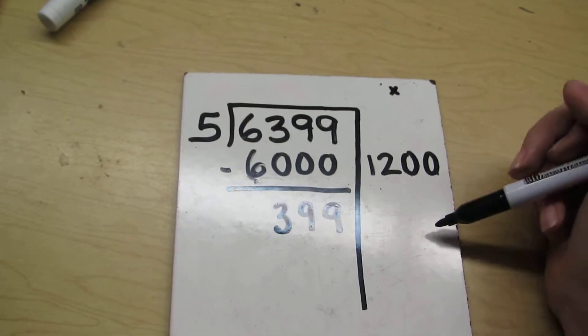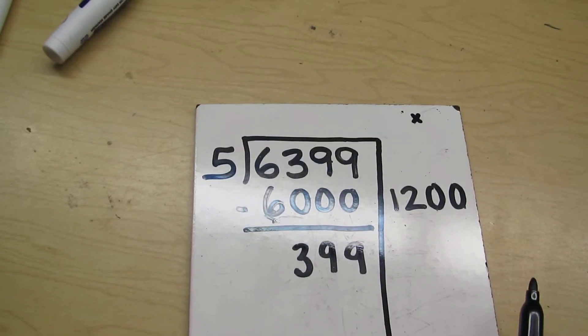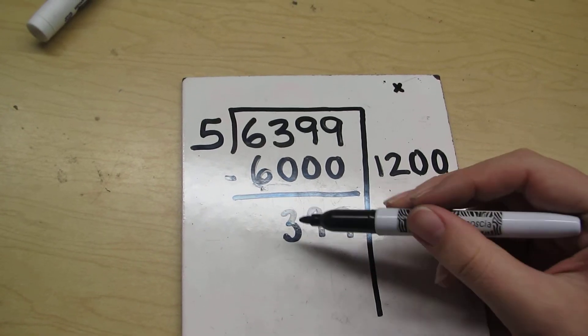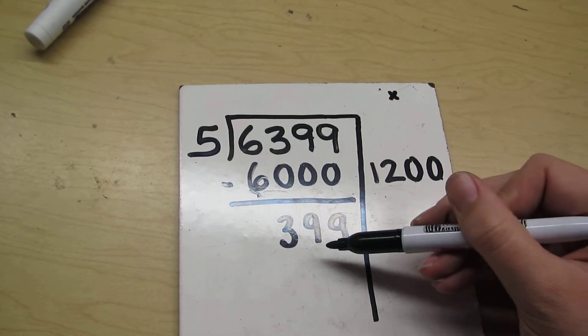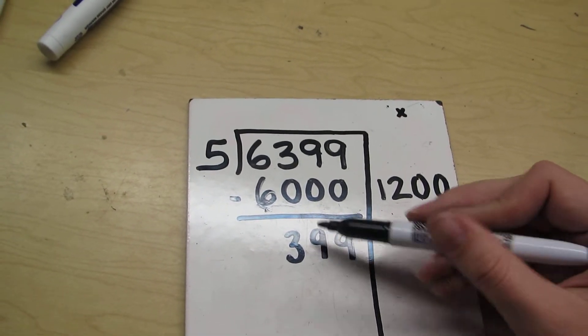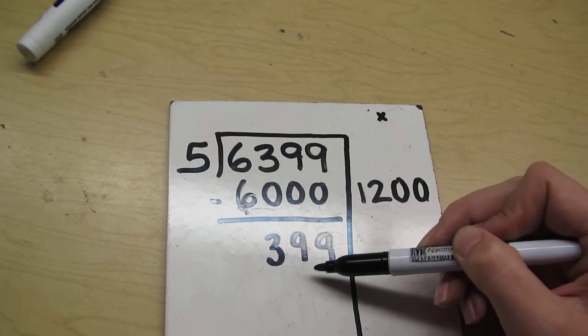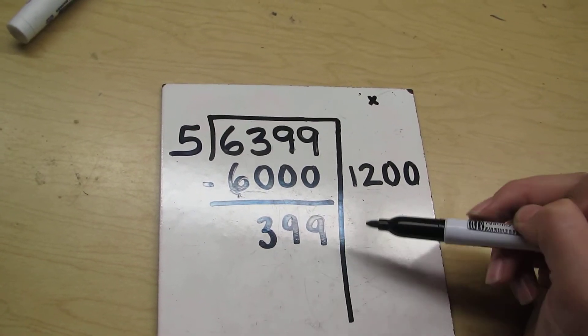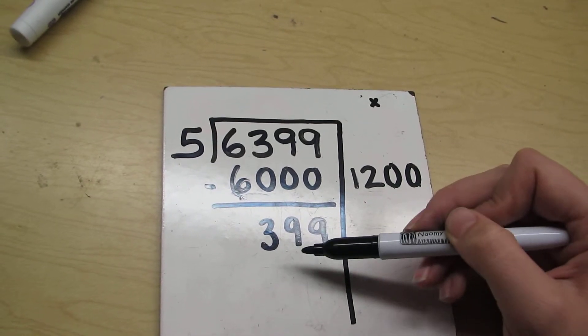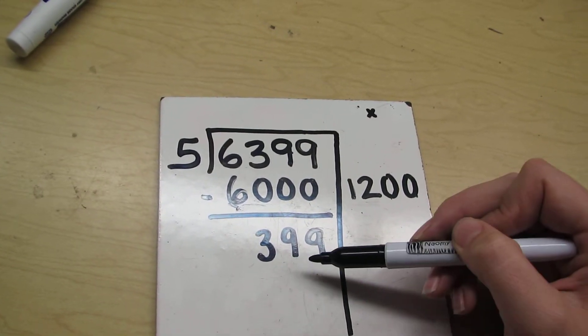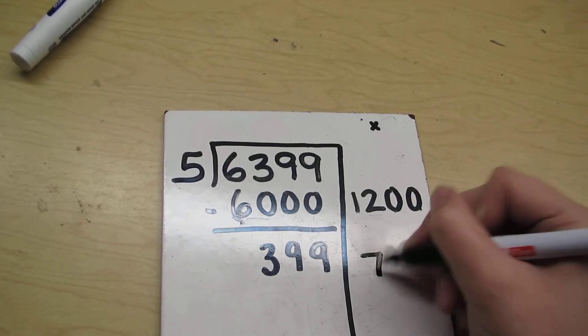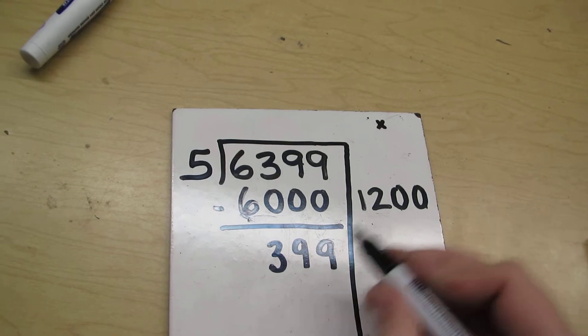Okay, now I'm going to pick another number to multiply that is going to get me as close as possible to 399. Well, I know that 5 times 6 is 30. I'm at 39. I'm going to see if I can go a little bit bigger than that. 5 times 7 is 35. Okay, that's even closer. 5 times 8 is 40. That's close but it actually went over, so I can't use it if it goes past the number I'm looking for. So I'm going to try 5 times 7. 5 times 7 is 35.